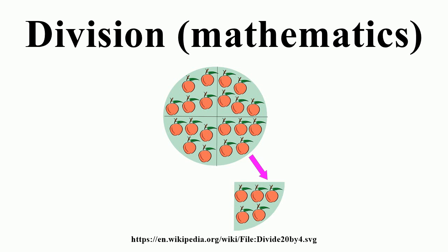Euclidean division. The Euclidean division is the mathematical formulation of the outcome of the usual process of division of integers. It asserts that,